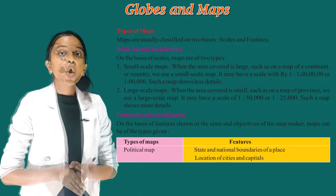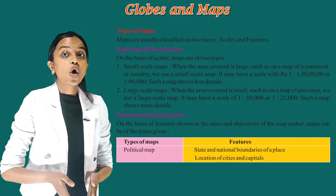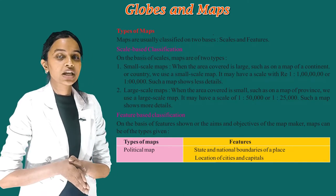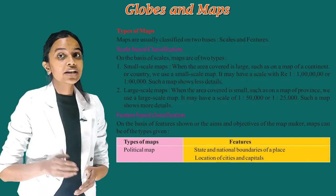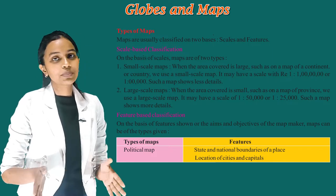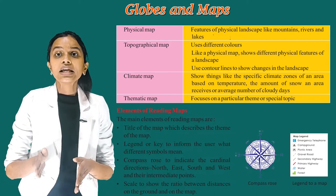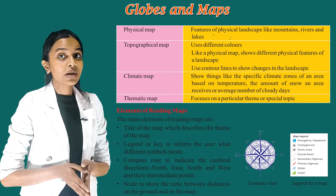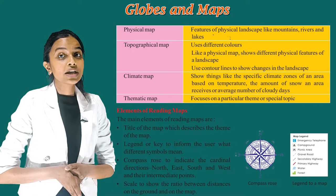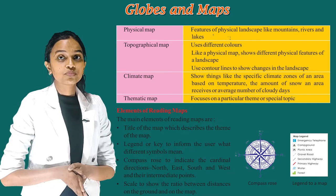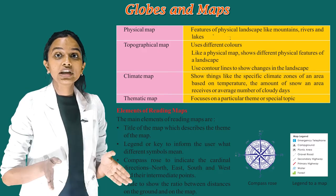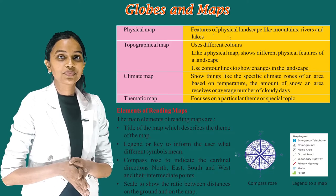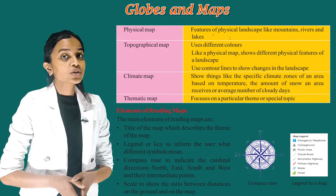Feature-based classification: on the basis of features shown, or the aims and objectives of the map maker, maps can be of the following types. Political map: shows states and national boundaries of a place, and the location of cities and capitals. Physical map: shows features of the physical landscape like mountains, rivers and lakes. Topographical map: uses different colours like a physical map to show different physical features of the landscape, and uses contour lines to show changes in the landscape. Climate map: shows things like the specific climate zones of an area based on temperature, the amount of snow an area receives, or the average number of cloudy days. Thematic map: focuses on a particular theme or special topic.